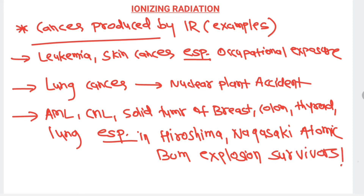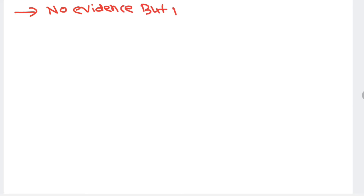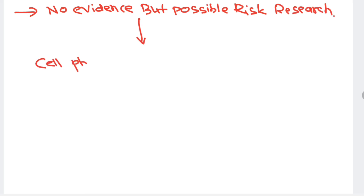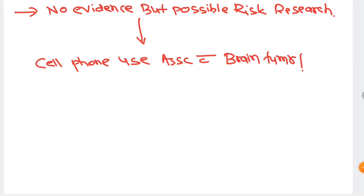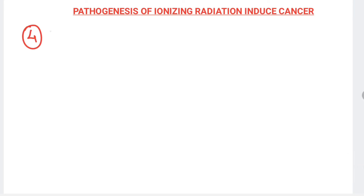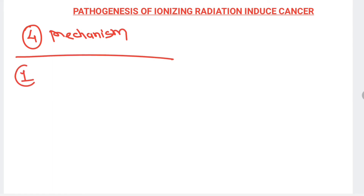One interesting but not conclusive research finding is that excessive cell phone use may be associated with brain tumors — it is a possible risk but not yet proven. Now let's look at the pathogenesis of ionizing radiation-induced cancer and how it leads to cancer development.